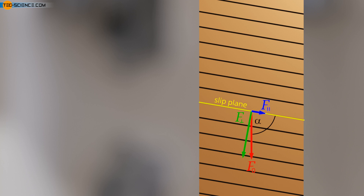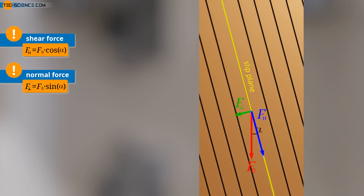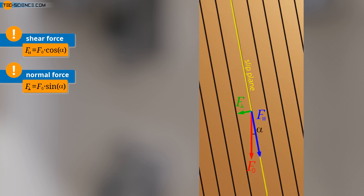If a slip plane lies at an angle alpha to the tensile axis, the external force F0 can be decomposed into a component parallel to the slip plane and a component perpendicular to the slip plane. The shear force and the normal force can be determined as a function of the angle alpha. If the angle alpha is relatively large, that is close to 90 degrees, the shear force in the slip plane is relatively low, and the force may not be great enough to activate the slip plane. If the slip plane lies at a relatively small angle alpha, the shear force is relatively large, but the area of the slip plane increases, along with the number of bonds between the planes, so the greater shear force may still not be sufficient to cause shearing.